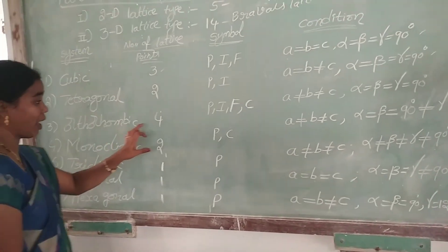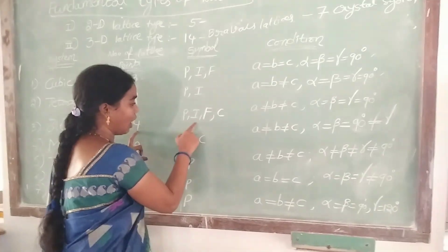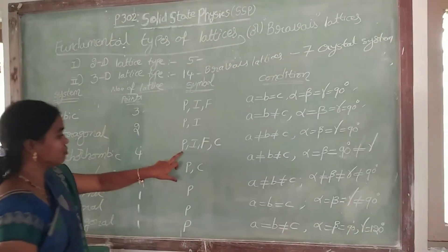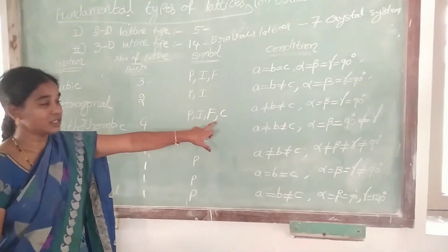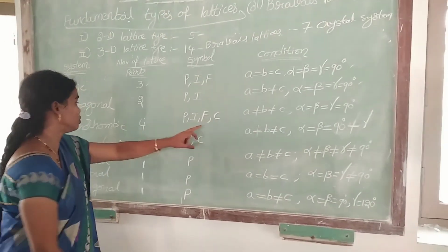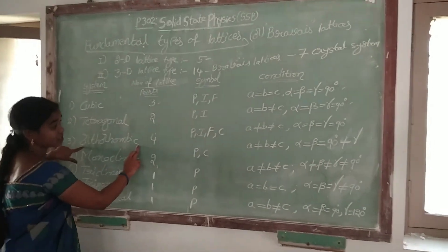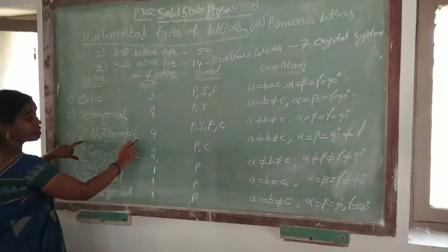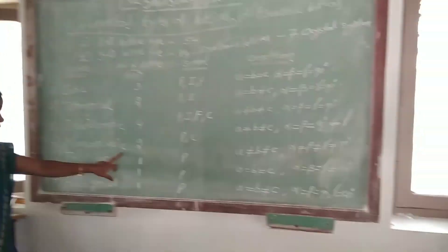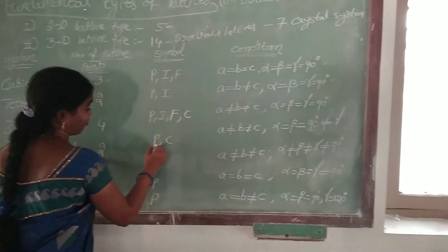Orthorhombic crystal system has four types of Bravais lattices: P, I, F, and C. We know P is primitive, I is body centered, and F is face centered. C means base centered crystal system, so base centered orthorhombic crystal system. Monoclinic crystal system has two types of Bravais lattices: P and C.